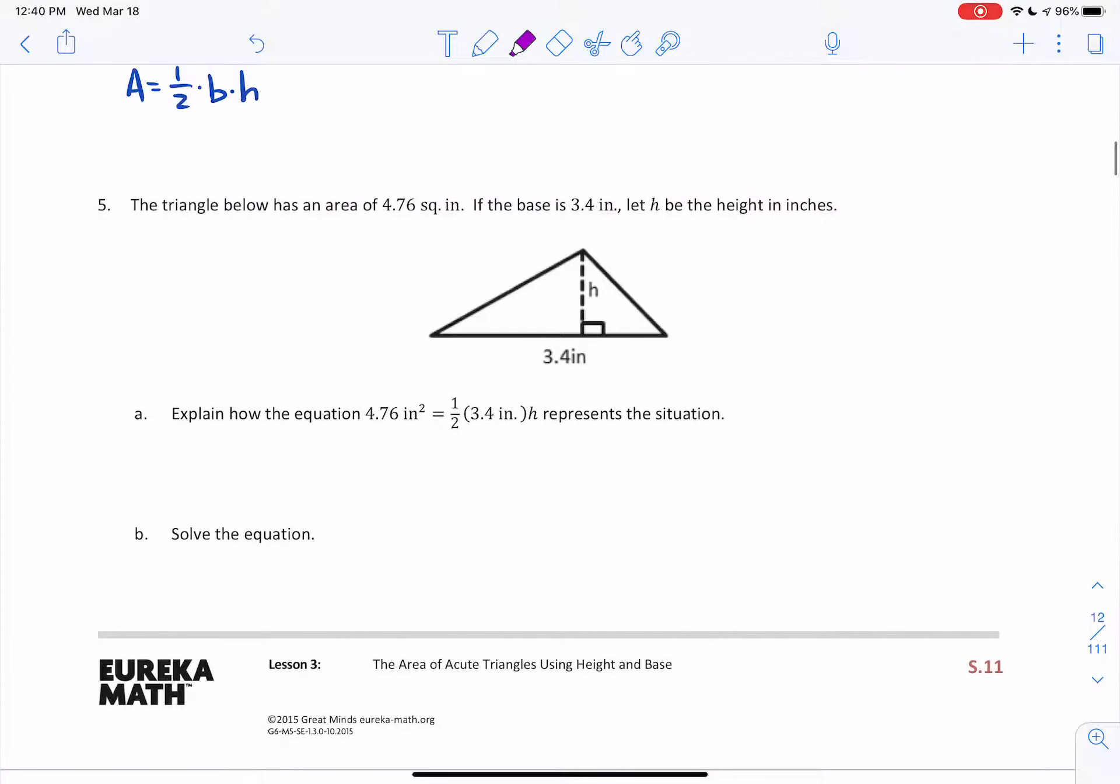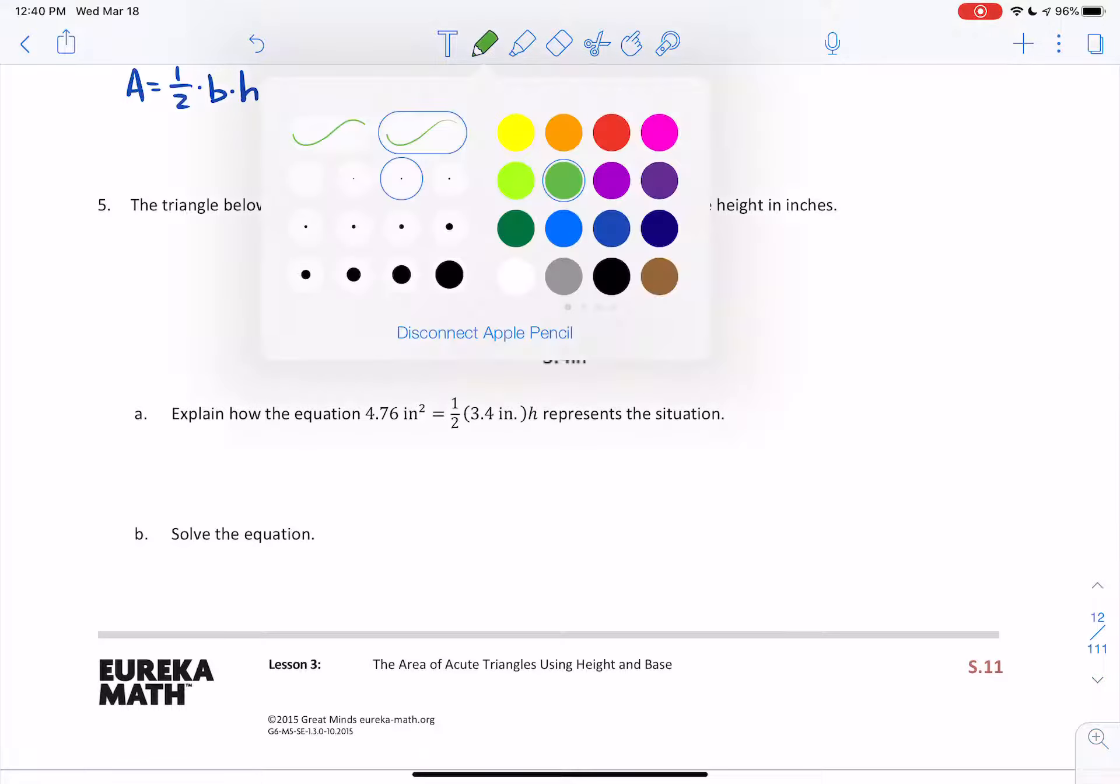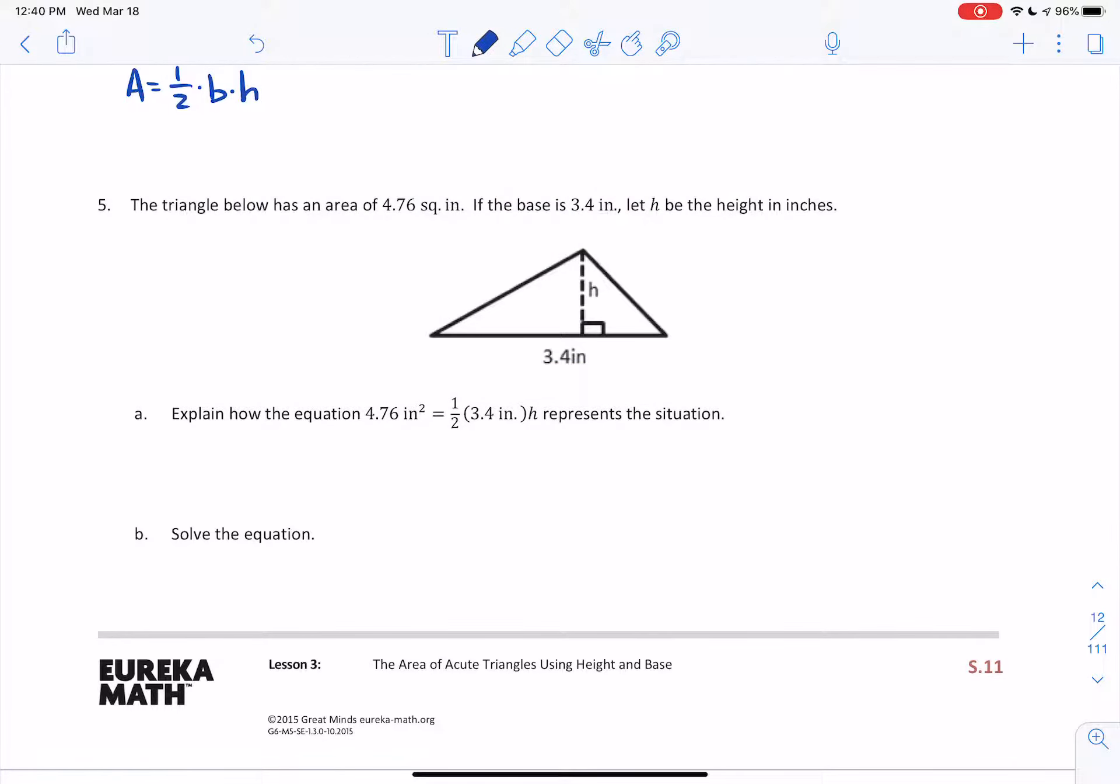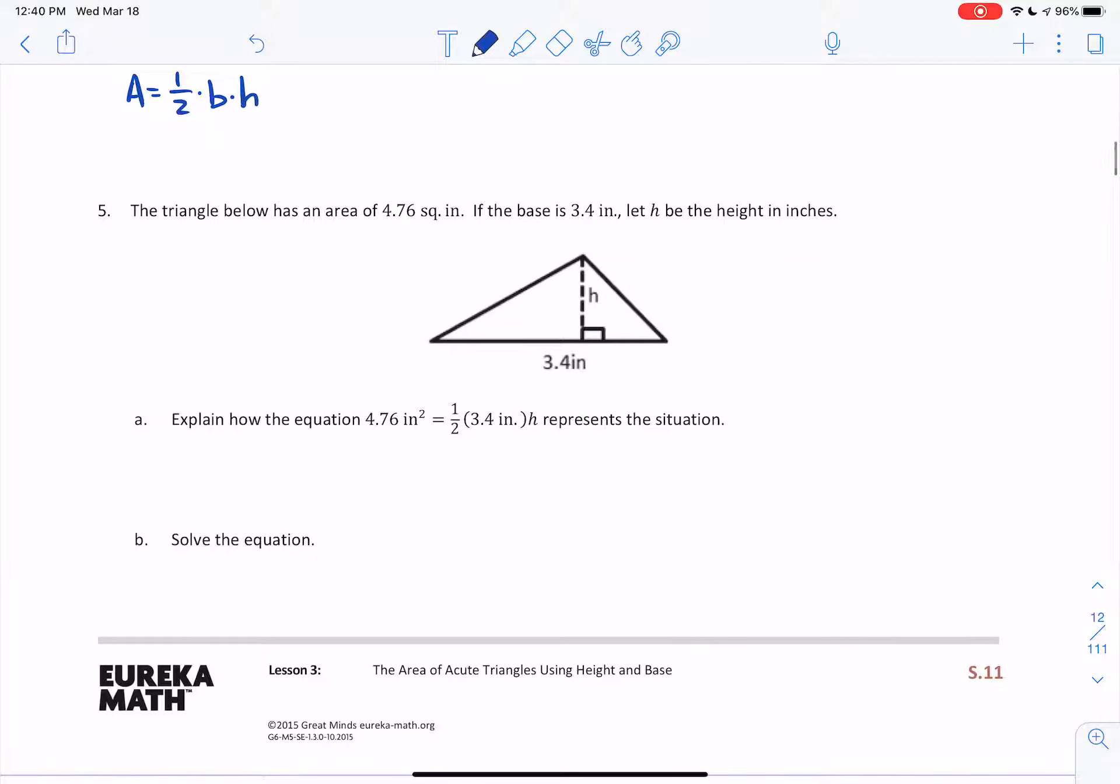Question number five. The triangle below has an area of 4.76 square inches, and it gives you the base of 3.4 inches, and we want to find the height. These questions are tricky at first, but then once you realize how to work them out, in my opinion, I don't think they're so bad. So area equals, we could say one-half base times height. I prefer saying base times height divided by two. That's just my preference. And they give me the area. They tell me the area is 4.76. So under area, I'm just going to go ahead and write 4.76. They give me the base. The base is 3.4. So in place of the B, I'm going to put 3.4. Then we have the H. Then we have the two.